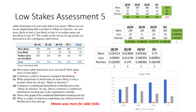So this is what Low Stakes Assessment was about. It was this contingency table and you were asked some questions. How many adult Americans were surveyed and how many were 55 and older? So 2160 were surveyed and 55 and over were 536.